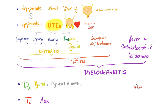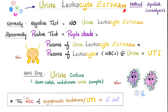How can we diagnose this? We look for white blood cells in the urine, pus in the urine, leukocyte esterase in the urine, nitrites in the urine, and the actual bacteria in the urine. Management is antibiotics.